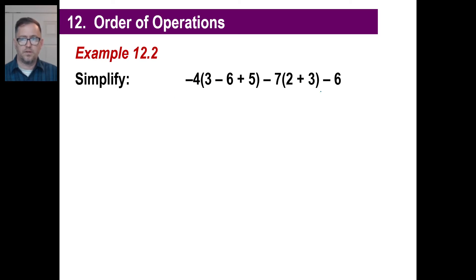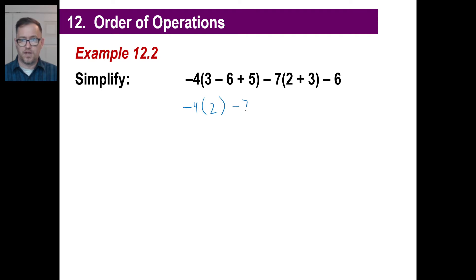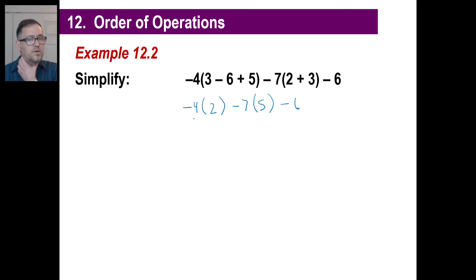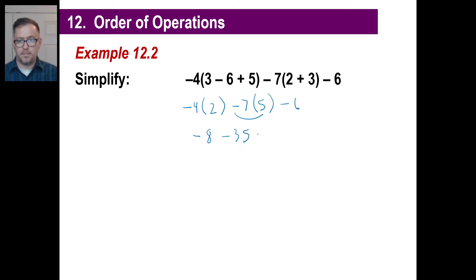Don't get caught up trying to do this all at once. Just copy your negative 4 down and work on the parentheses first. What is 3 minus 6? That is negative 3. Negative 3 plus 5 is 2. Minus 7. Then 2 plus 3 is 5, and then minus 6. Our order of operations says to multiply next.